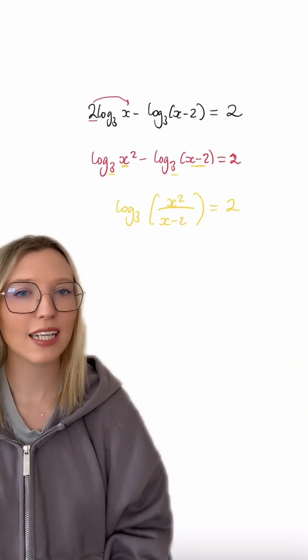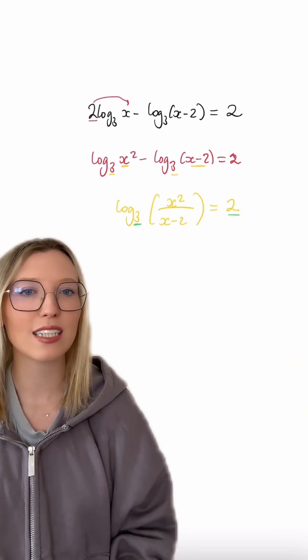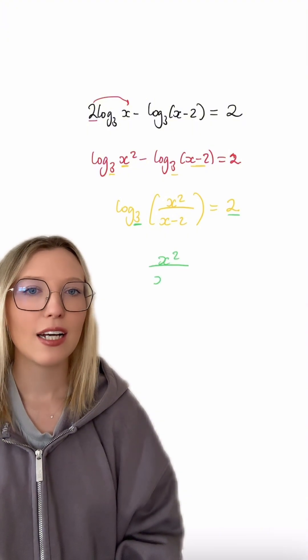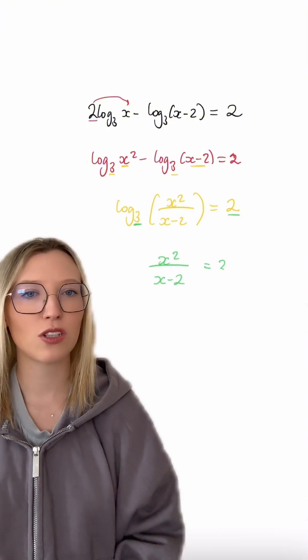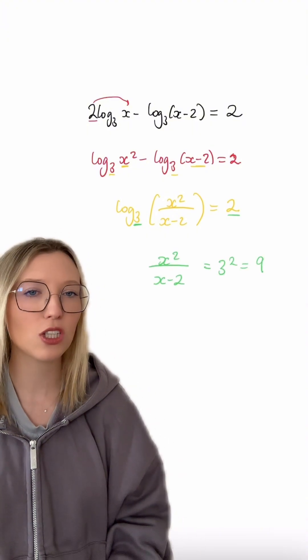Now to remove the log, what we can do is take the base, which is 3, and we're going to raise it to the power of the 2 on the other side. So we get x squared over x minus 2 equal to 3 squared, which is 9.